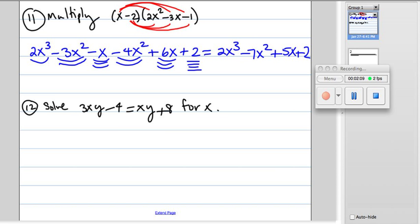Notice we have an x and a y in this equation, but solve for x means get x all by itself. So we're going to put all the x's on one side, so we're going to subtract this xy from both sides.